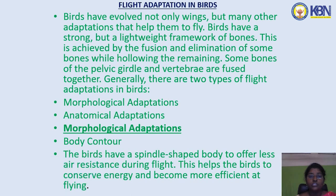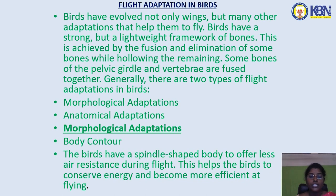Birds have a strong but lightweight framework of bones, achieved by fusion and elimination of some bones, while hollowing out the remaining ones. Some bones of the pelvic girdle and the vertebrae are fused together. There are two types of flight adaptations: morphological and anatomical. For morphological adaptations, birds have a spindle-shaped body to offer less air resistance during flight, helping conserve energy and becoming more efficient at flight.